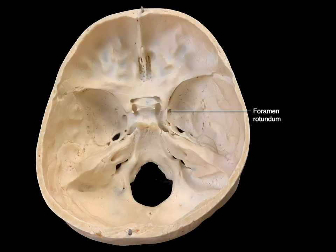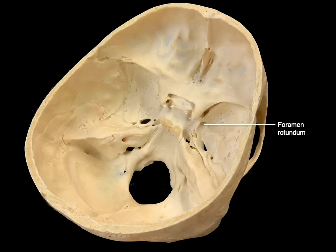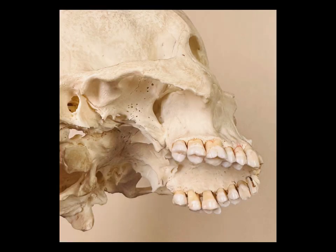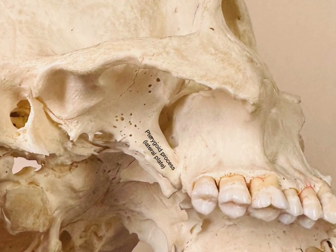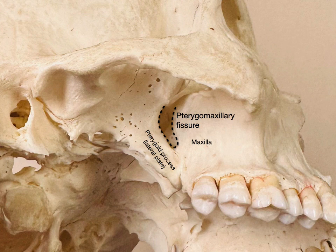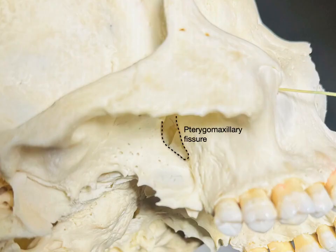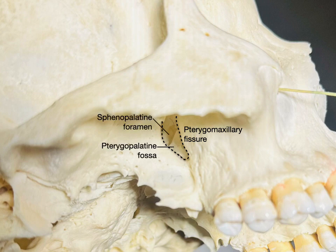Let's do a little osteology. Looking at a superior view, there's the foramen rotundum in two different views — that's where V2, when it goes through the foramen rotundum, enters the pterygopalatine fossa. If we look laterally on the skull and tip the skull up, there is the pterygoid process, or lateral plate of the pterygoid process of the sphenoid bone, and there is the maxilla. Between the two is the pterygomaxillary fissure, which is the door that enters into the pterygopalatine fossa. Going in a little further, we can see the sphenopalatine foramen that communicates into the nasal cavity.